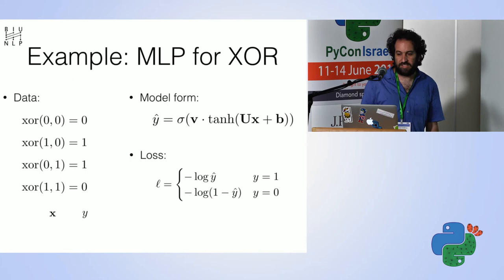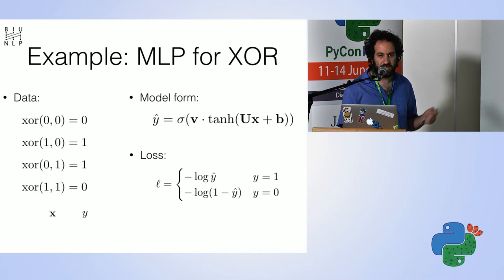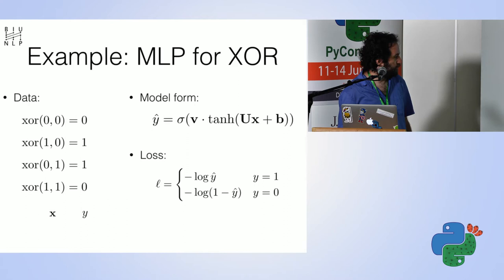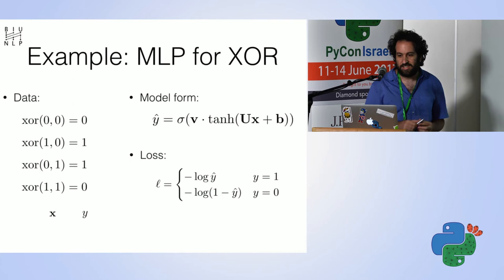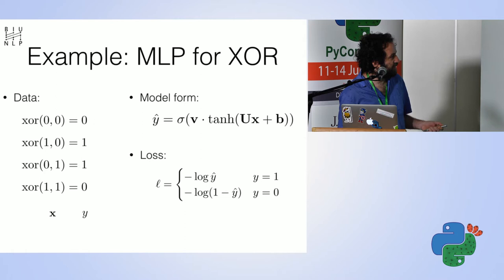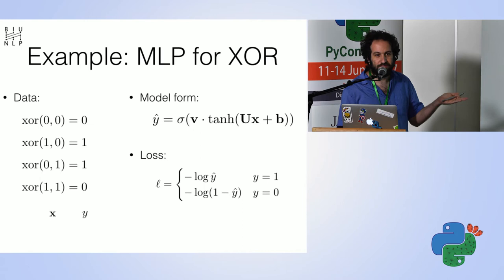Now let's have an example: we want to write an MLP, multi-layer perceptron, for the XOR problem. Two zeros give zero, one and zero give one, zero and one give one, and one and one give zero — the basic thing neural nets can do and linear models cannot. Our model form is a sigmoid over an MLP, and this is our loss written in mathematics.